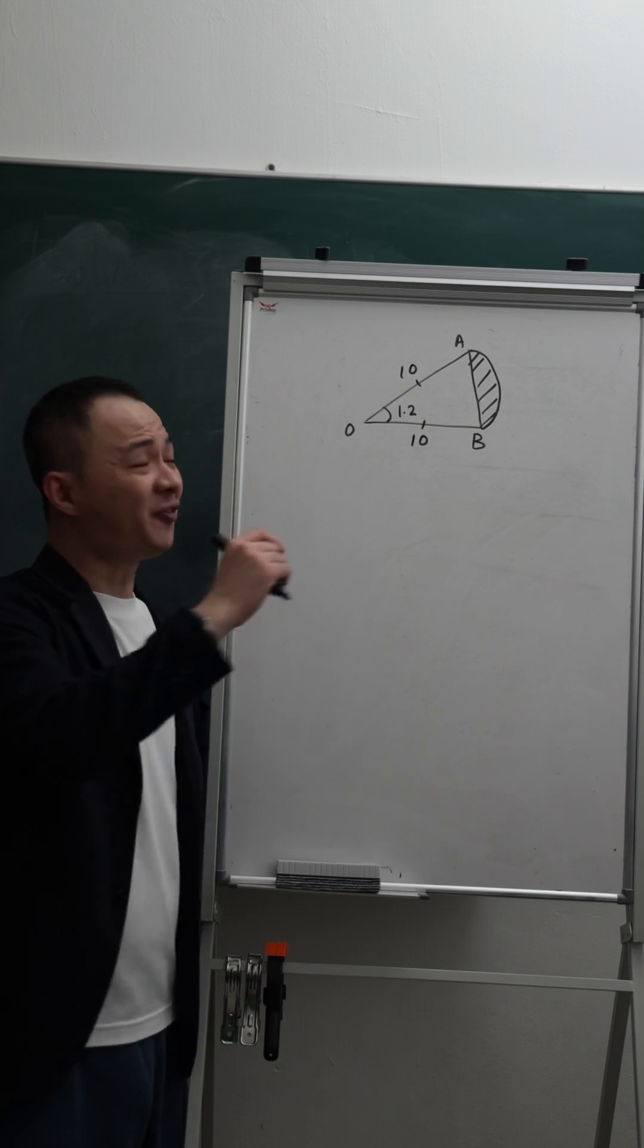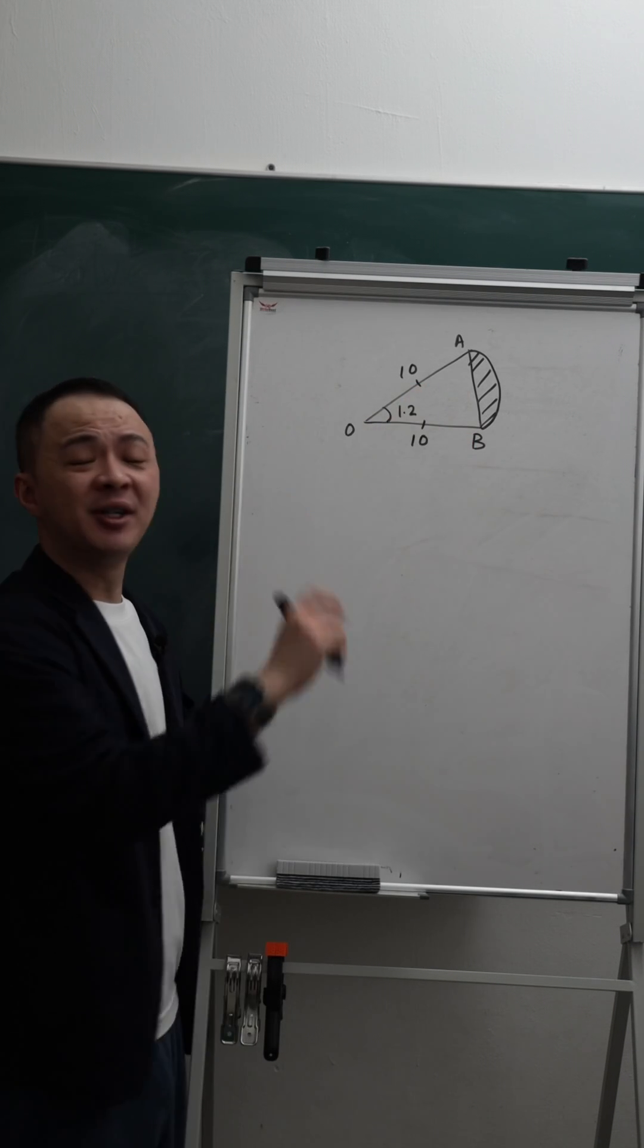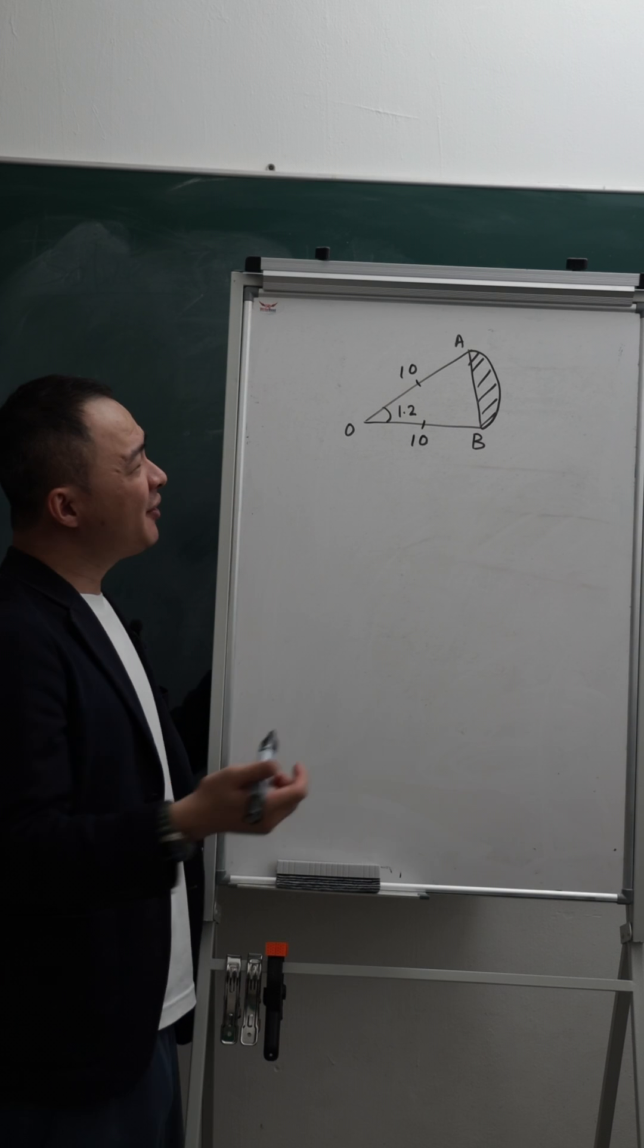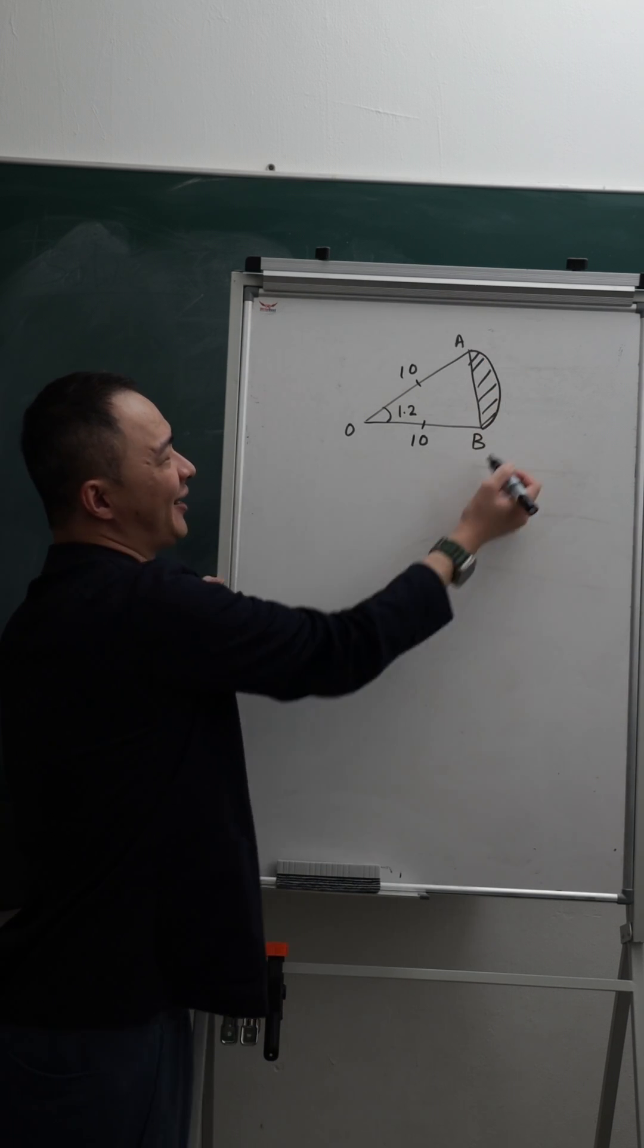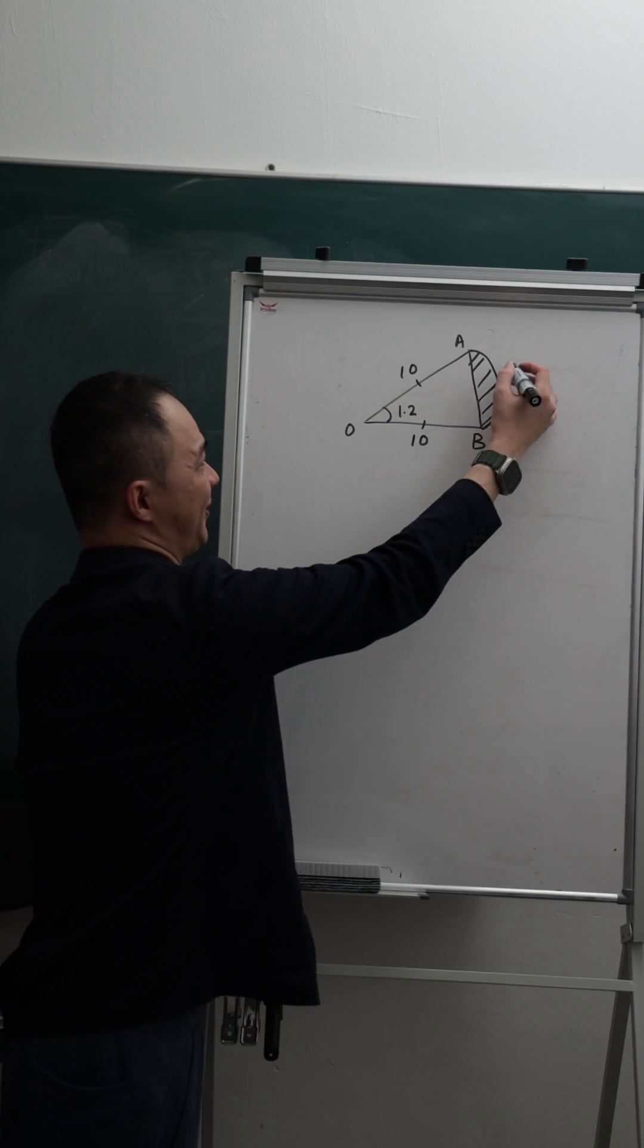Okay, let's say today we want to find the perimeter of the shaded region. I believe a lot of students know how to find the arc length because the arc length formula is very easy.